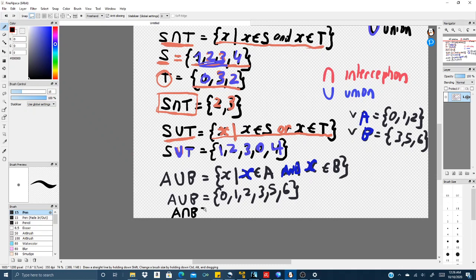Now for A intercept B, the answer will be empty set. And the reason why is that all the elements in A are not included in set B.